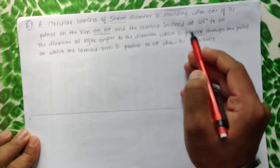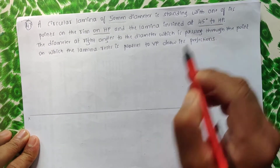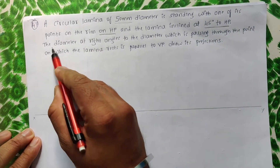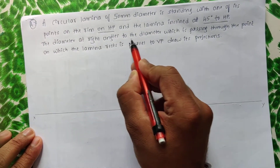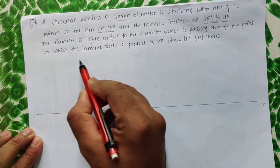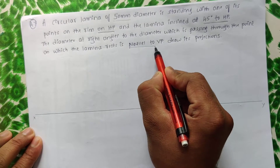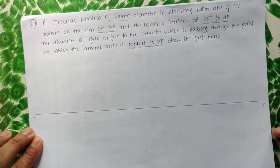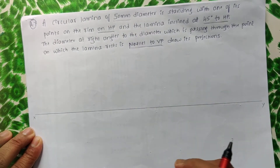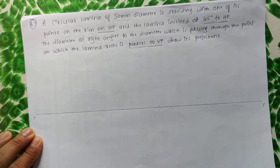The lamina is inclined at 45 degrees to HP. The diameter at right angles to the diameter which is passing through the point on which the lamina rests is parallel to VP. That is the condition. Draw the projections.